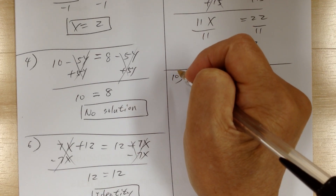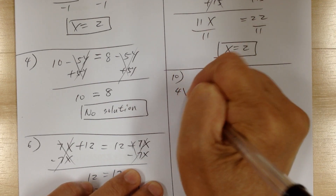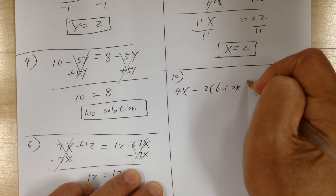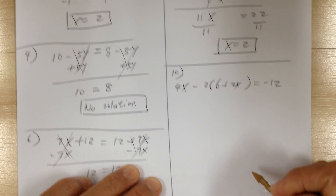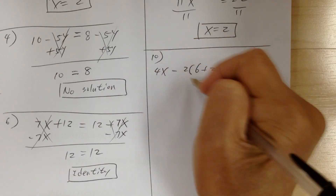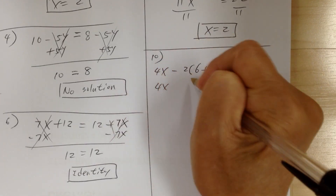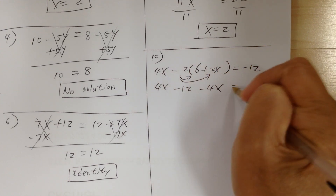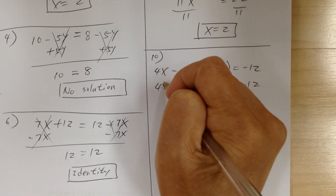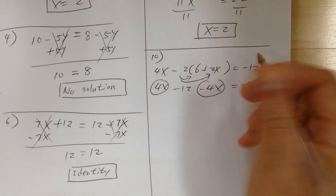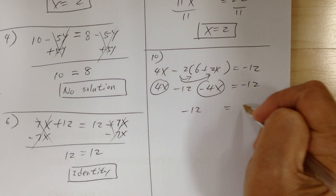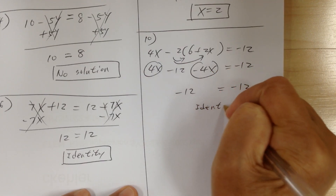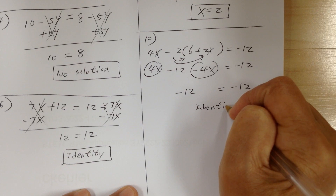Number 10. You have 4x minus 2 times (6 plus 2x) equal to negative 12. First, let's get rid of the parentheses by distributing. You get minus 12, and distributing gives minus 4x equal to negative 12. Combine the like terms — they cancel out — so you get negative 12 equal to negative 12. So this is your identity, because they are exactly the same.